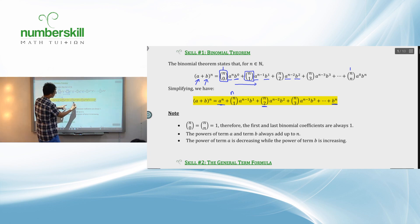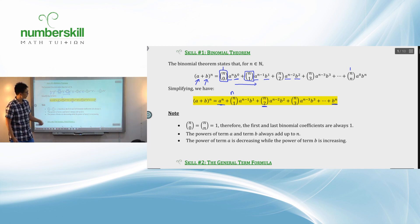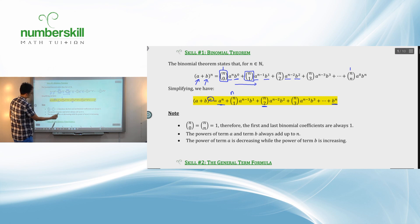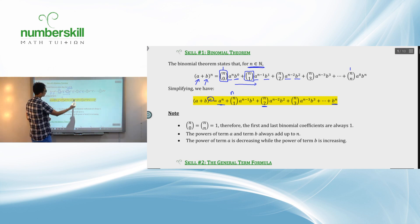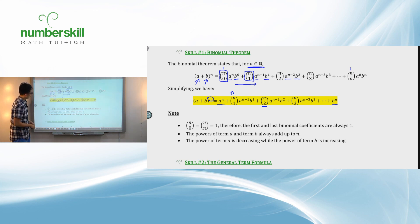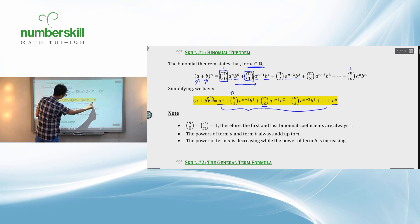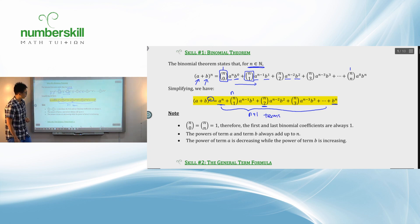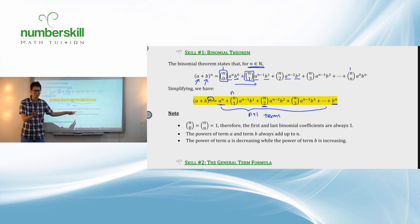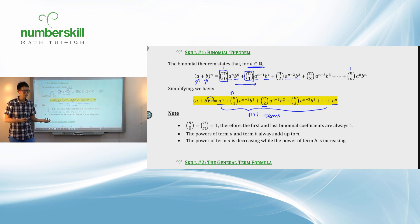This is the theorem that helps you expand everything. A few things you want to know: number one, N must be a positive integer — what we call natural numbers, like 1, 2, 3, 4, 5, and so on. The other thing is that when fully expanded, you expect to have N plus 1 terms altogether. For example, if N is 2, you get 3 terms: A squared, 2AB, B squared. If the power is 10, you get 11 terms.